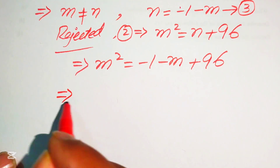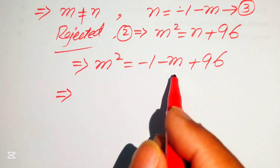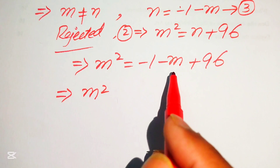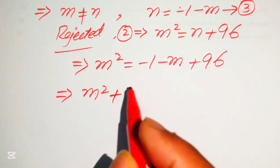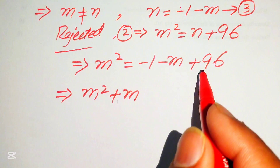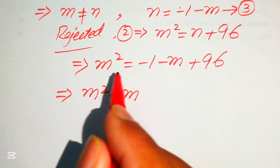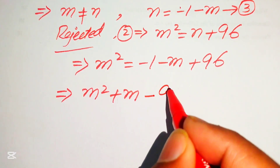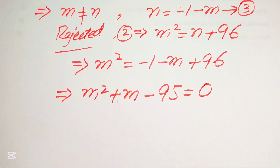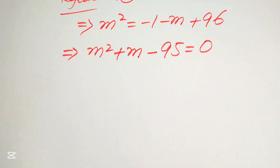We move all terms to the left-hand side: m² + m + (-1 + 96) = 0, which becomes m² + m + 95 = 0. Then moving +95 to the left gives us m² + m - 95 = 0. This is a quadratic equation in m, so we apply the quadratic formula.